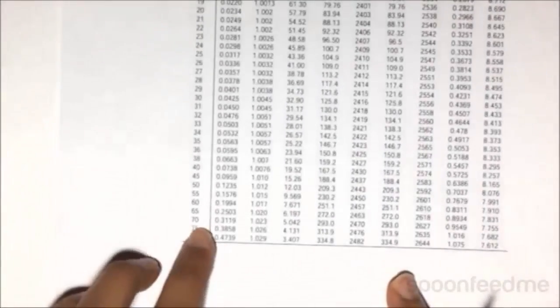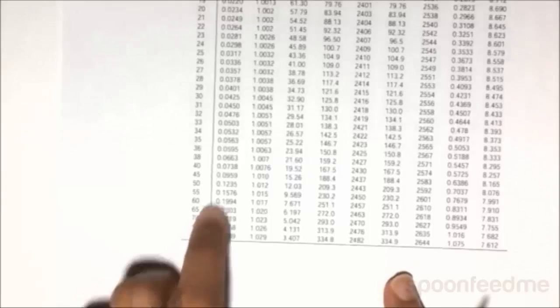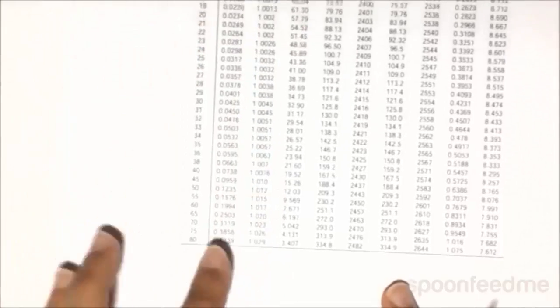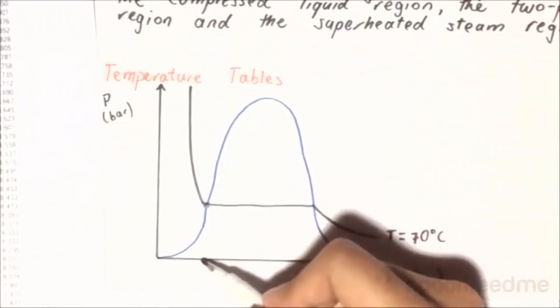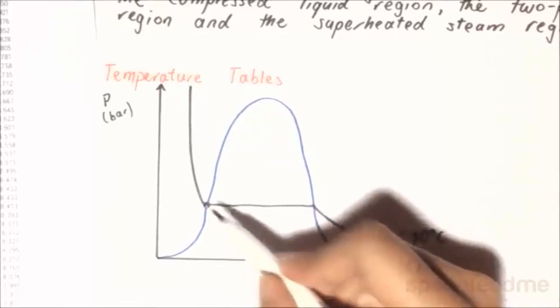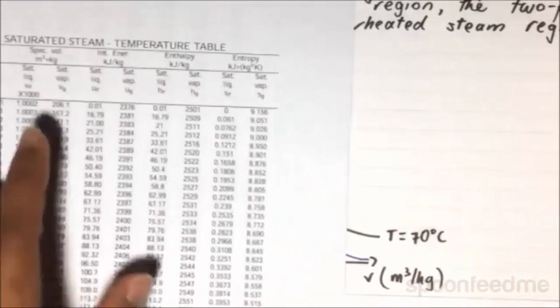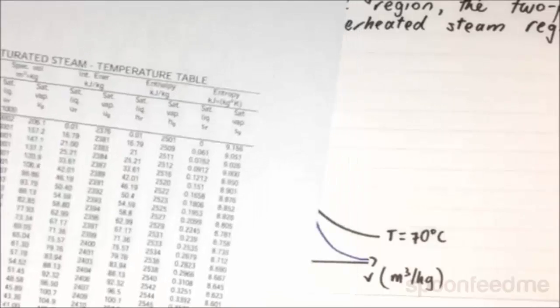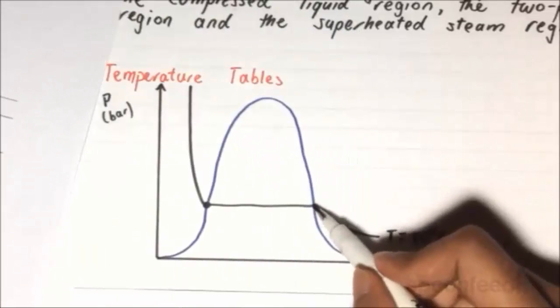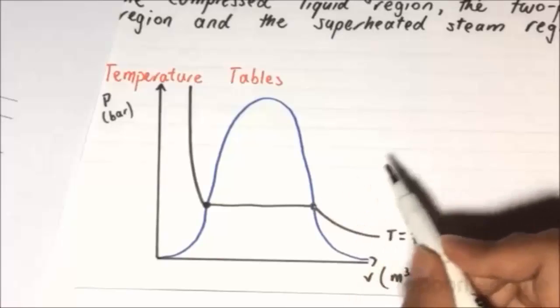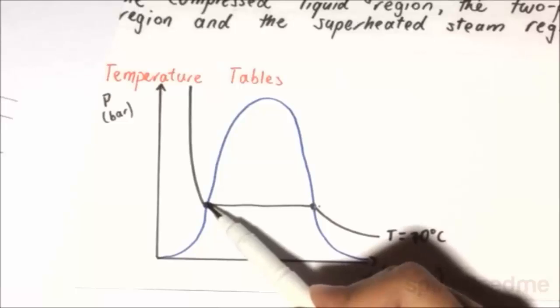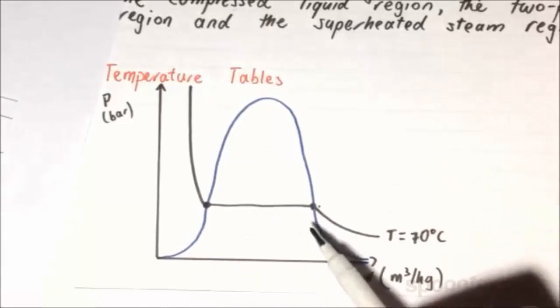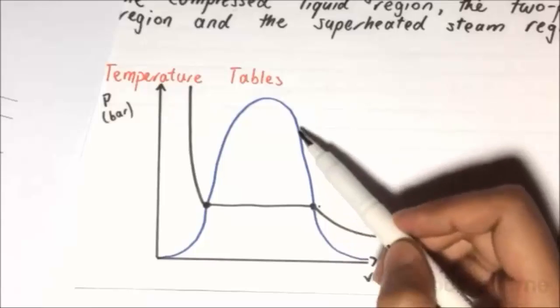Basically, if we look at the entry for 70 degrees Celsius right here, what the VF value is saying is that the VF is the specific volume at this point right here. Conversely, the VG value for 70 degrees Celsius is the specific volume at this point right here. So the F corresponds to the saturated liquid line, and the G corresponds to the saturated vapor line.